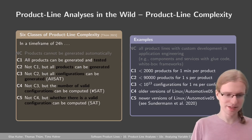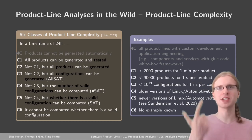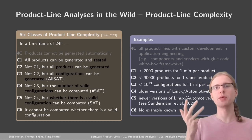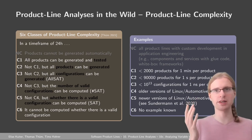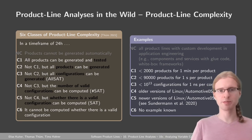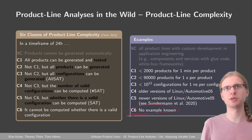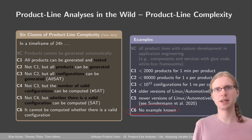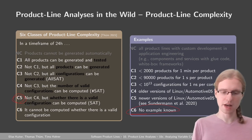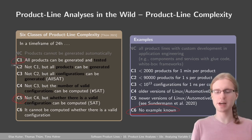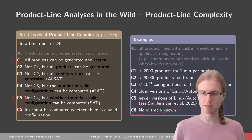There is also a sixth class where we cannot test products, cannot generate them, cannot generate configurations, cannot count configurations, and cannot even determine whether a valid configuration exists. Theoretically this is the hardest class of product lines. A reconciliatory conclusion is that at least no example is known for this class — we do not know of any product line which we cannot analyze at all. Some are very hard, like the current Linux kernel, and some are very easy, like the small examples on lecture slides, but nothing falls in the hardest class.